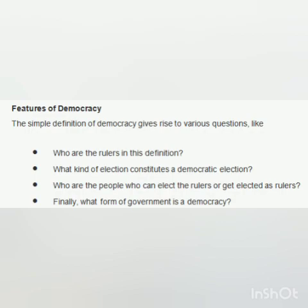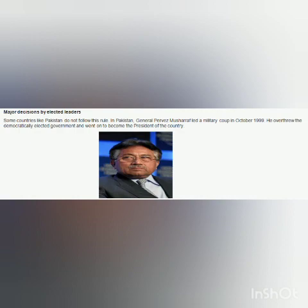Thus the simple definition of democracy gives rise to various questions: Who are the rulers in this definition? What kind of election constitutes a democratic election? Who are the people who can elect the rulers or get elected as rulers? And finally, what form of government is a democracy? Now we are going to discuss the features of democracies.